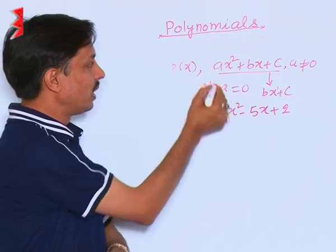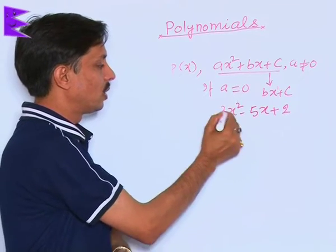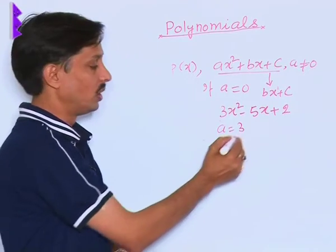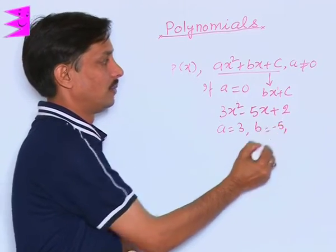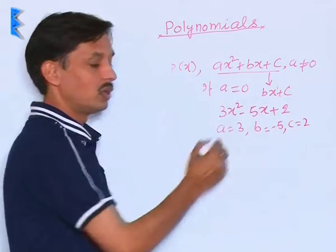So, if I compare it with the standard, I can say the value of A in this example is 3, the value of B is minus 5, and the value of C is 2.